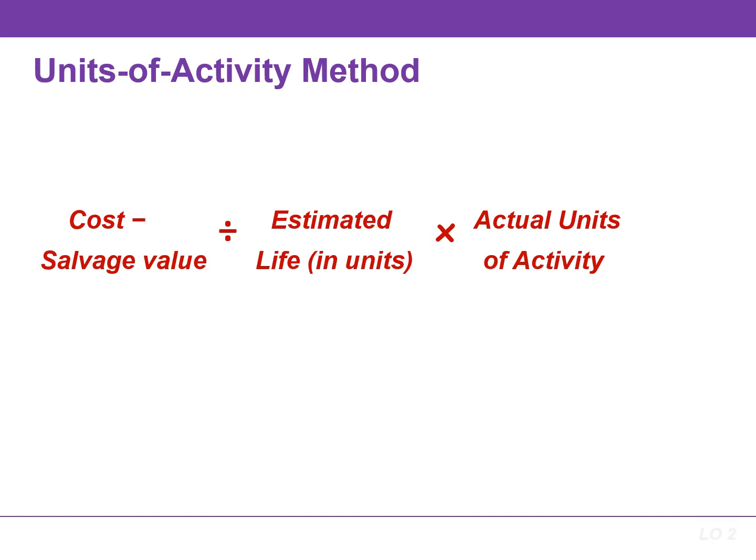The formula for the Units of Activity depreciation is the cost minus the salvage value divided by the estimated life in units, multiplied by the actual units of activity.